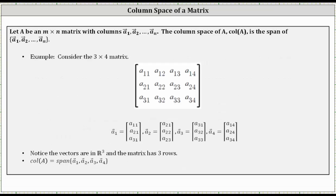As an example, let's consider the given three by four matrix. Vector a sub one is the first column, vector a sub two is the second column, vector a sub three is the third column, and vector a sub four is the fourth column. Notice the vectors have three components, and therefore the vectors are in R three — the matrix has three rows. The column space of this matrix is equal to the span of these four vectors.